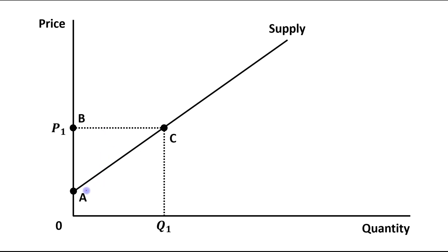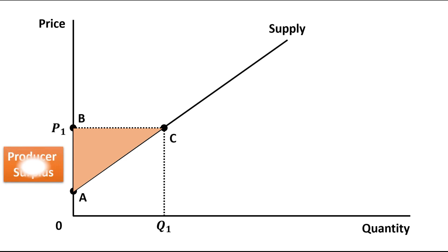So in our case, it will be this area — right above the supply curve and below the price level. So this area will be termed as producer surplus, that means area A, B, C.